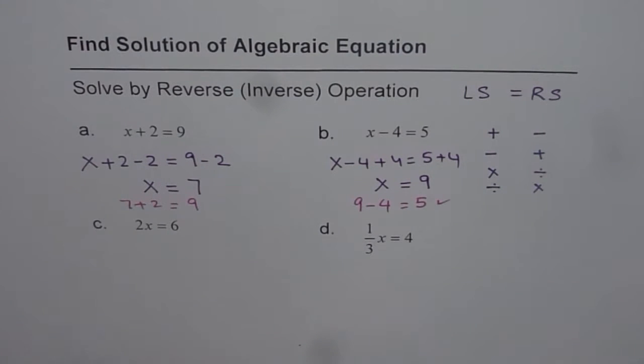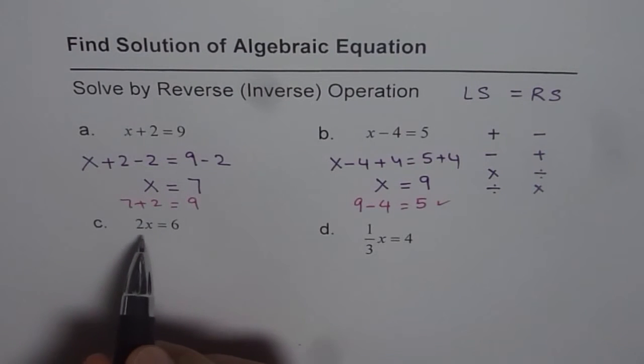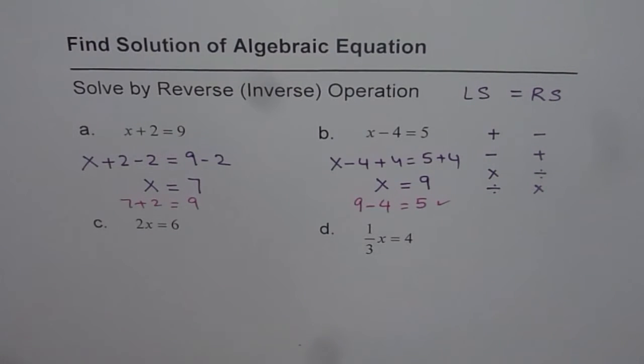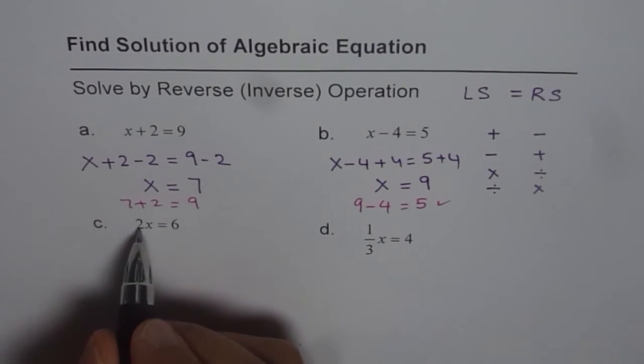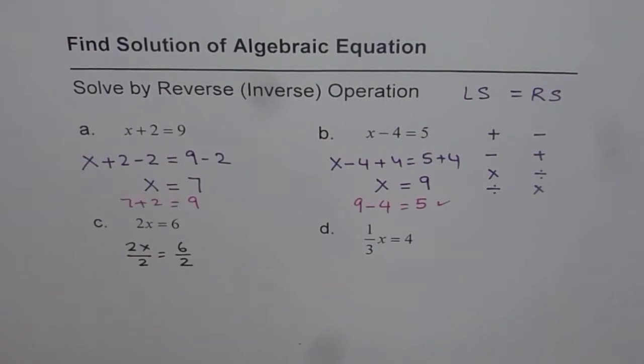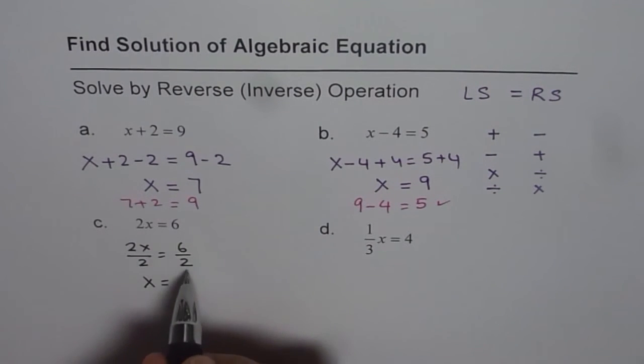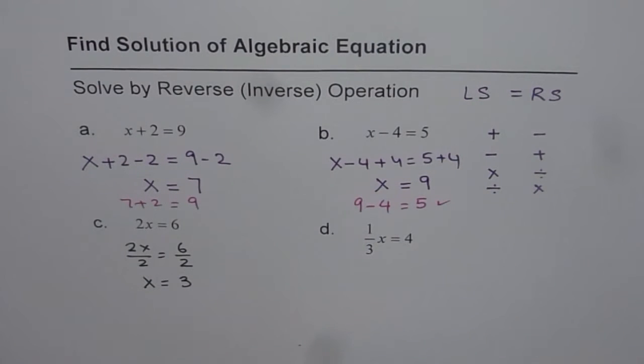Now let's do two more involving multiplication and division. Multiplication and division are inverse of one another. When we see 2x equals 6, it is 2 times x equals 6. What is inverse of times? Division. So let's divide by 2. 2x divided by 2 equals 6 divided by 2. 2 divided by 2 is 1, so x equals 6 divided by 2, which is 3. You can check: 3 times 2 is 6.